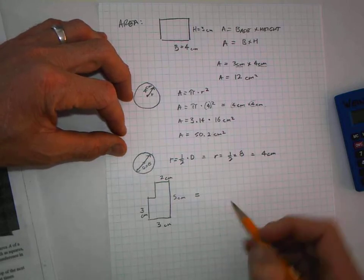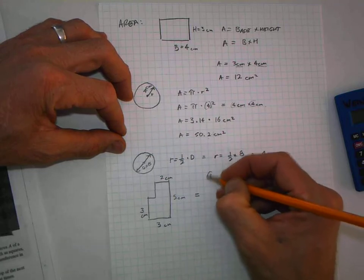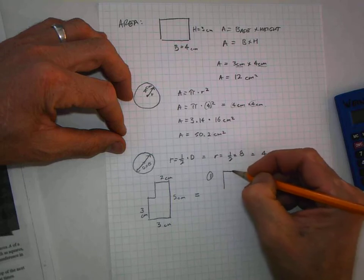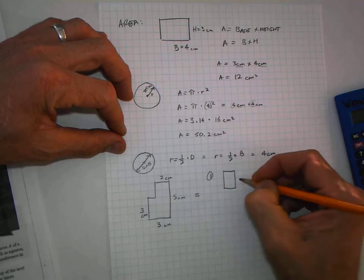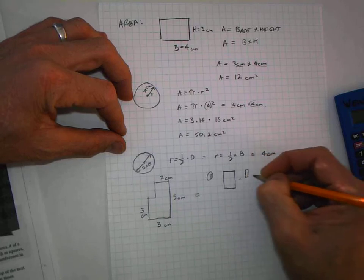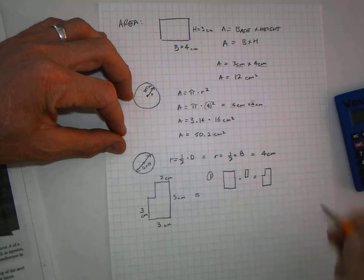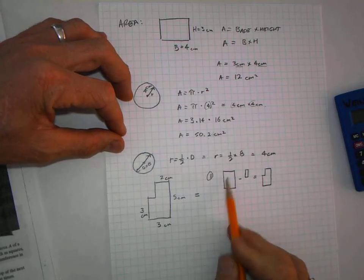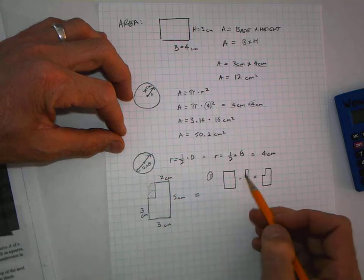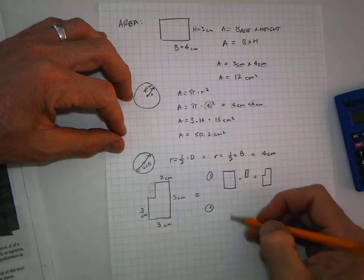Here's Method 1. You can think of this problem as a big square minus a little piece. The whole square minus this little piece equals the shape we want.